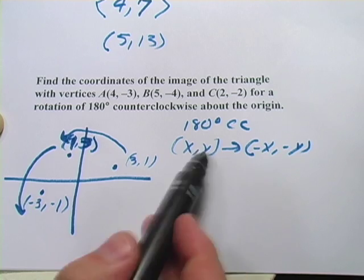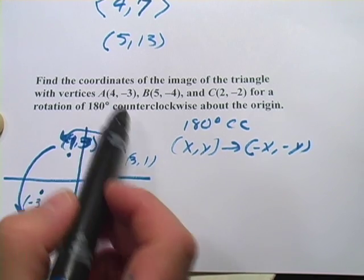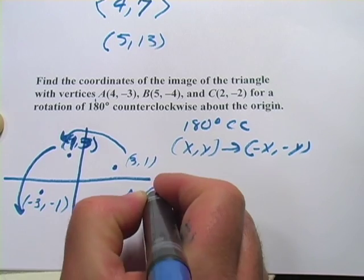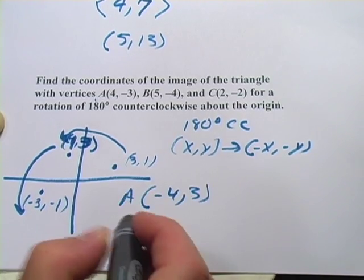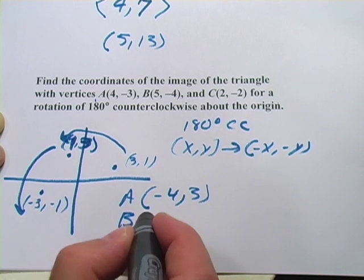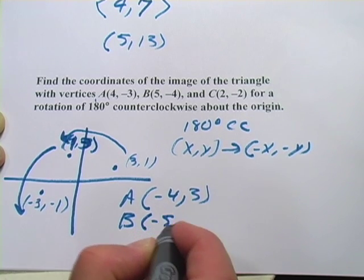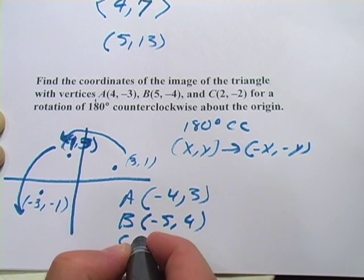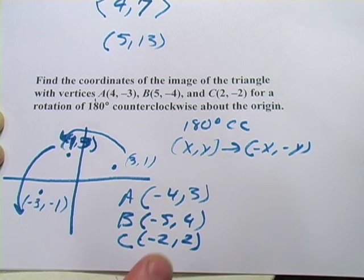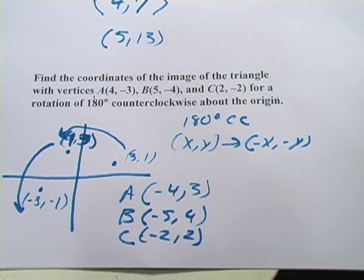And since we know that rule now, we can just apply it here. So A would be (-4, 3), since a negative times negative 3 is positive 3. B would be (-5, 4), and C would be (-2, 2). And that's all there is to it.